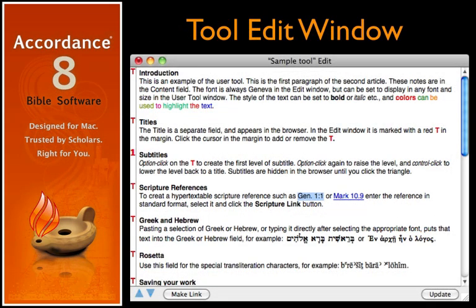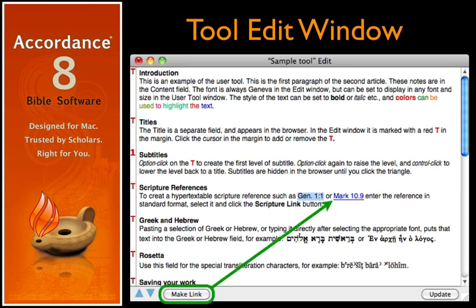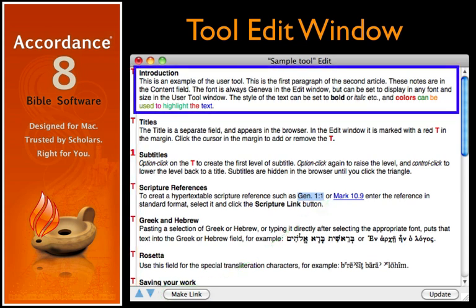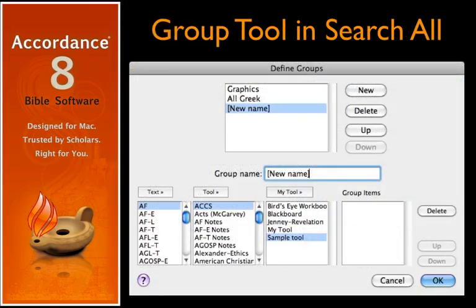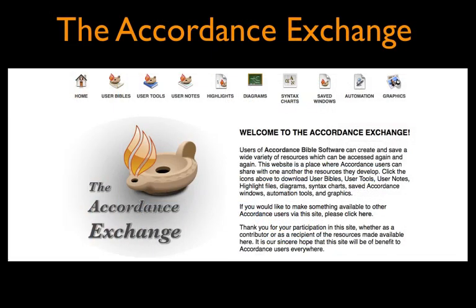All writing and editing in a user tool happens in the Edit window. Here we can also add titles and subtitles, create links to scripture and other material, and change font style and color. Clicking Update or typing Command-S saves the changes and updates the tool. Once completed, user tools can also be combined with other texts and tools to make custom search-all groups. And finally, we can upload our tools and share them with others on the Accordance Exchange.